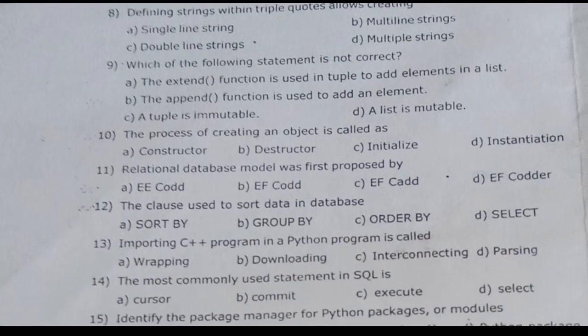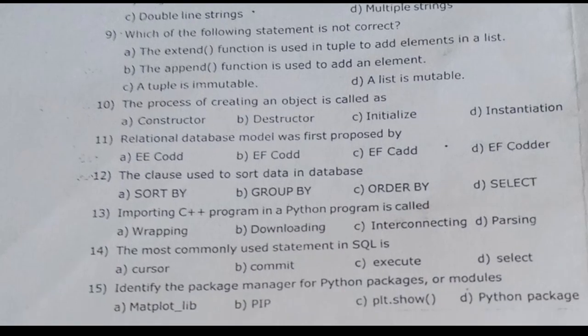The answer is 10th, the answer is instantiation, D. That's the option. The answer is B, F, Europe. Which is 12th. The answer is SORT.